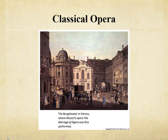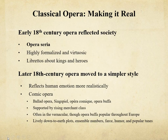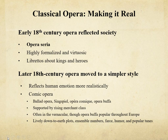This is a painting of the small theater in Vienna where Mozart's opera The Marriage of Figaro was first performed. Early 18th century opera reflected the hierarchies of society. Opera seria, or serious opera, was the norm — it was highly formalized and virtuosic, with librettos about kings and heroes. Later 18th century opera, however, moved to a simpler, more accessible style that reflected human emotion more realistically. The primary vehicle for this was comic opera, found across Europe: ballad opera in England, Singspiel in Germany, opéra comique in France, and opera buffa in Italy. This new type of opera was supported by the rising merchant class. Comic opera was often in the vernacular, and Italian opera buffa was popular throughout Europe, featuring lively, down-to-earth plots, ensemble numbers, farce, humor, and popular tunes.